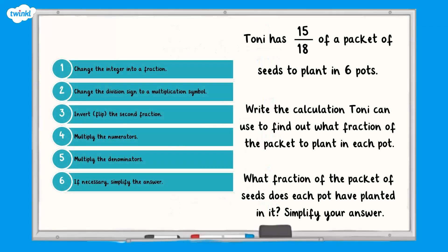Now let's try a challenge question. Tony has 15 eighteenths of a packet of seeds to plant in six pots. Write the calculation Tony can use to find out what fraction of the packet to plant in each pot. What fraction of the packet of seeds does each pot have planted in it? Remember to use the steps you have been practicing. Pause now while you answer the question.